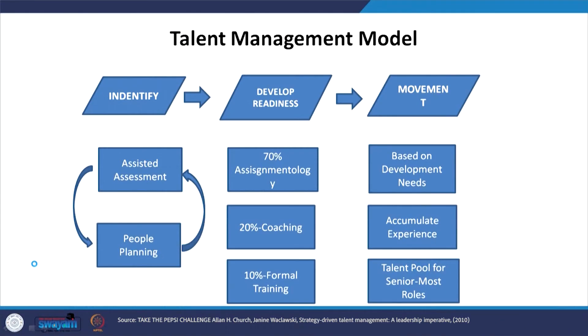In the talent management model, the first step is identifying how we are identifying the talent. We will also talk about automated screening in the case of identifying talented and potential employees. Whenever we talk about the recruitment process or the manpower planning process, the role of technology is also increasing. Therefore, identifying the right candidates means those who can be fitted into the organization culture.